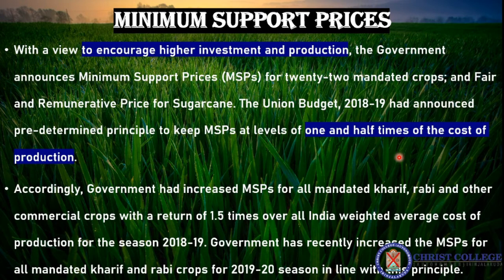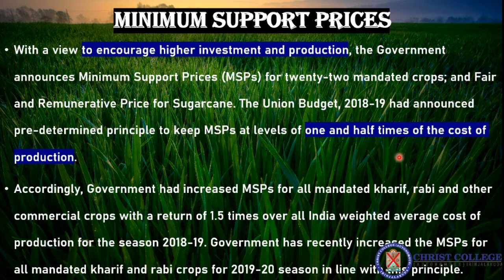Farmers earn based on the cost of production. In order to encourage investment and production, the government announces the Minimum Support Price for 22 mandated crops and sugarcane, for which a special Fair and Remunerative Price is set. In the 2018-19 Union Budget, the Minimum Support Price was kept at 1.5 times the cost of production to incentivize farmers to produce and invest more.